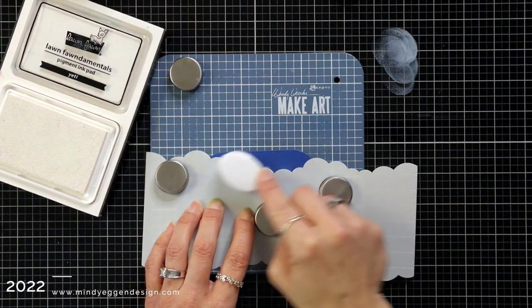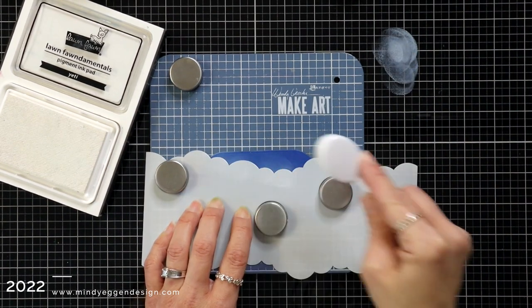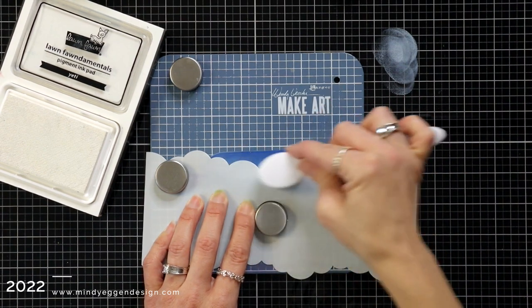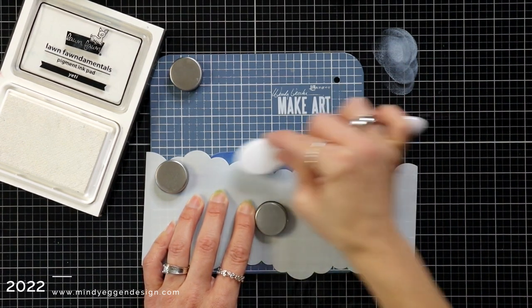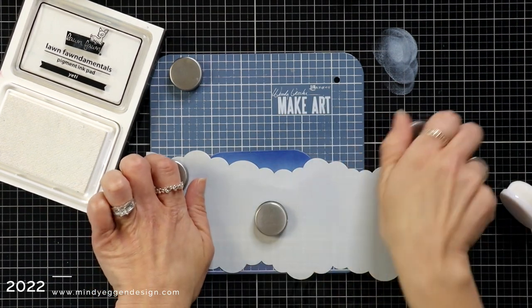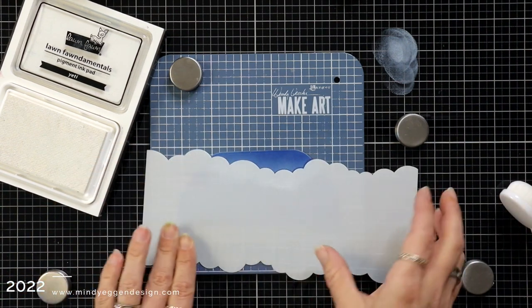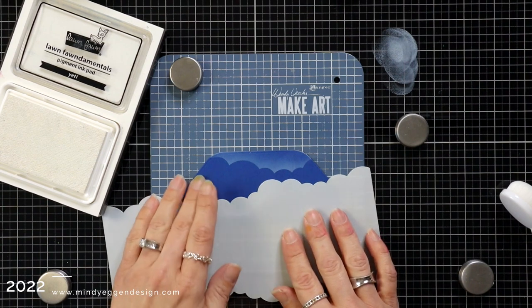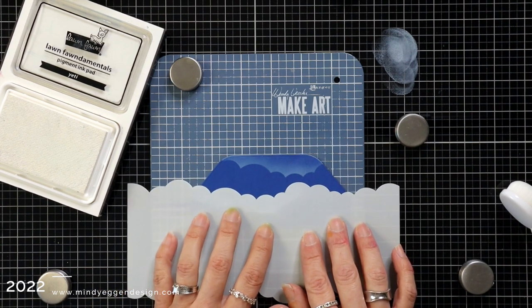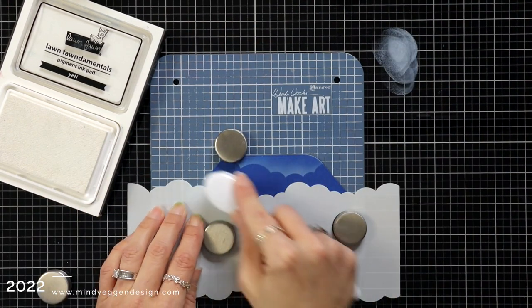I started out with the Yeti pigment ink from Lawn Fawn and I am taking the slimline cloudy stencil and just lightly ink blending this on. I'm using my make art station to hold my stencil down, but you could just use some post-it tape to hold that in place too. It was really hard to see where I was sitting if this was transferring, so I lifted up a little bit to peek and there was quite a bit of the white ink there. I'm going to remove the magnets, shift this down a little bit, and repeat those same steps.